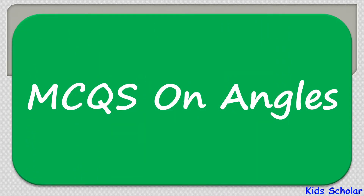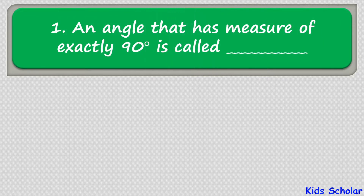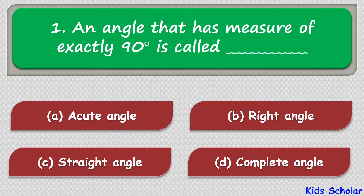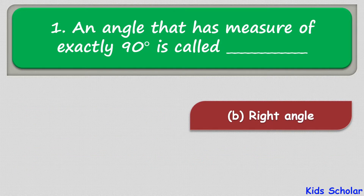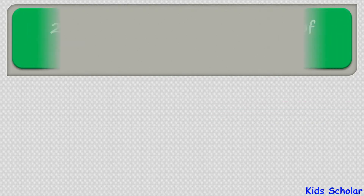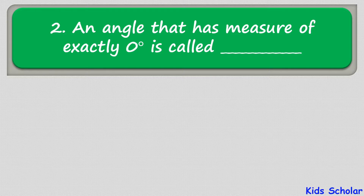Today's topic is MCQs on angles. The first question is: an angle that has a measure of exactly 90 degrees is called — the options are acute angle, right angle, straight angle, or complete angle. The correct answer is right angle.